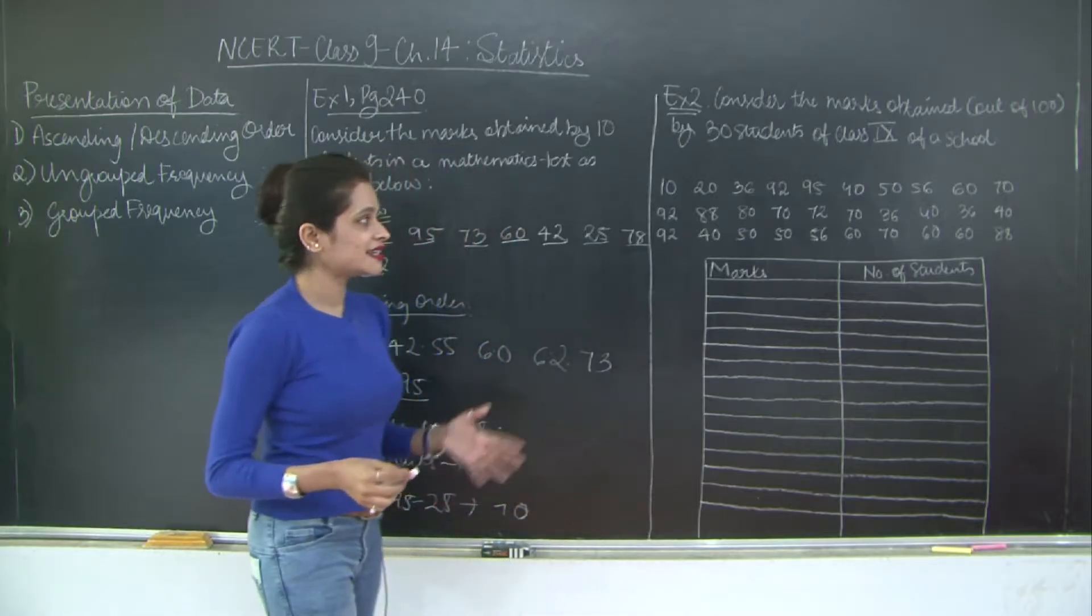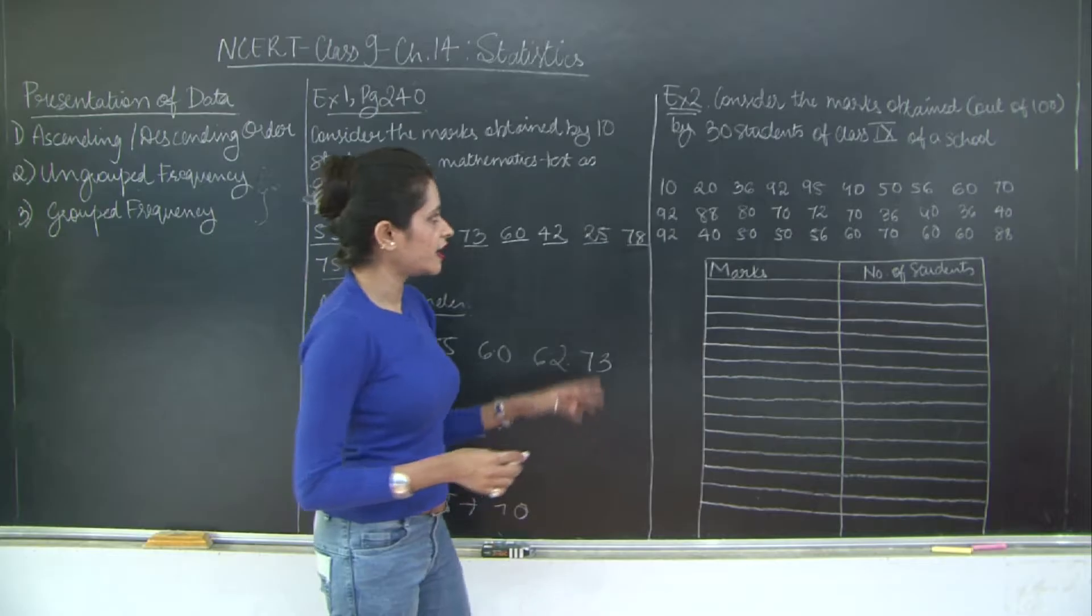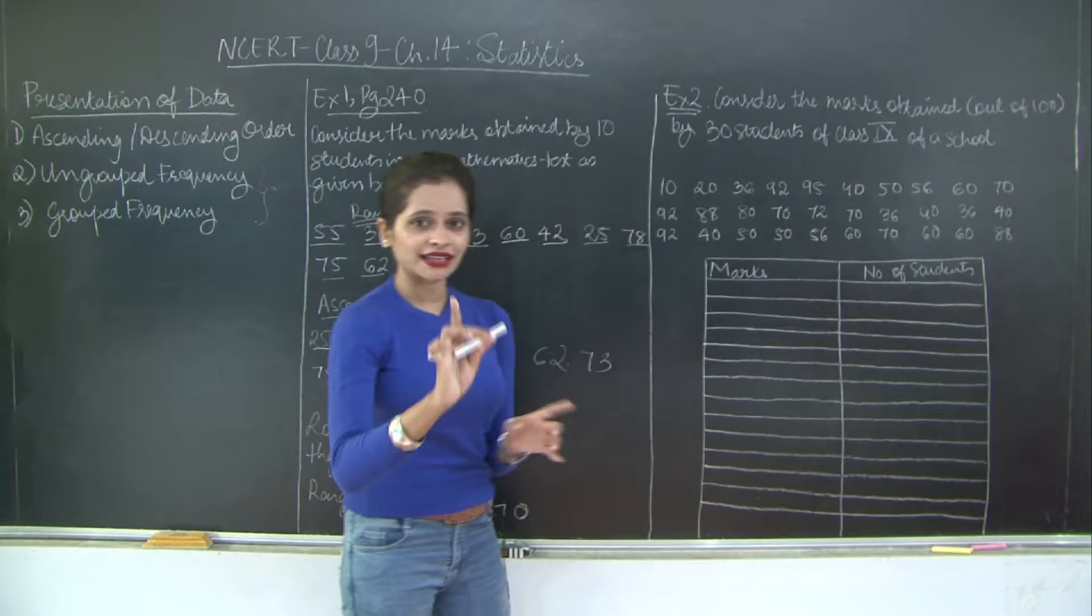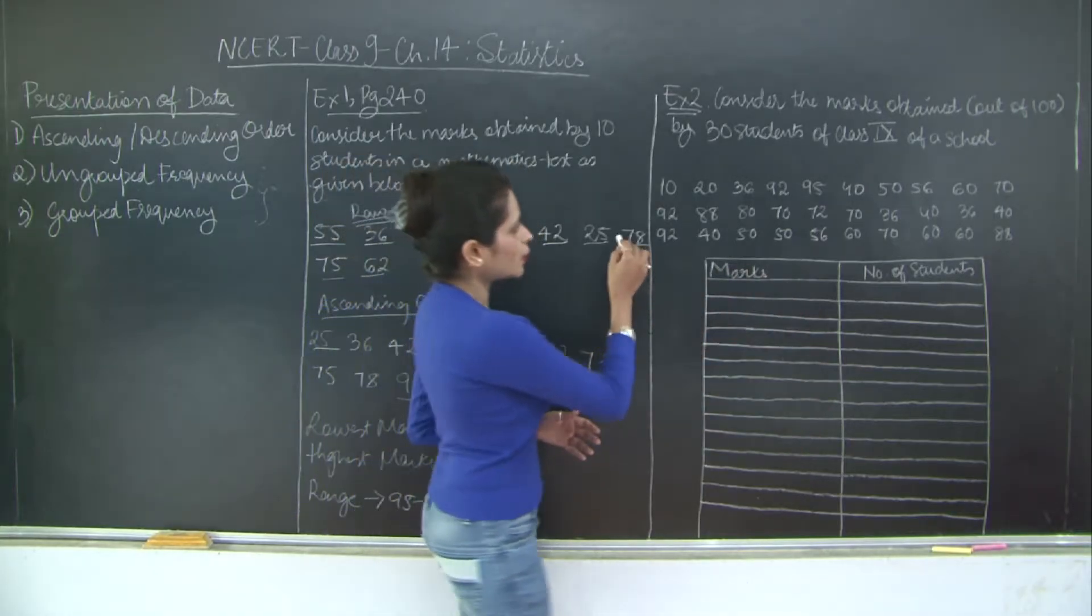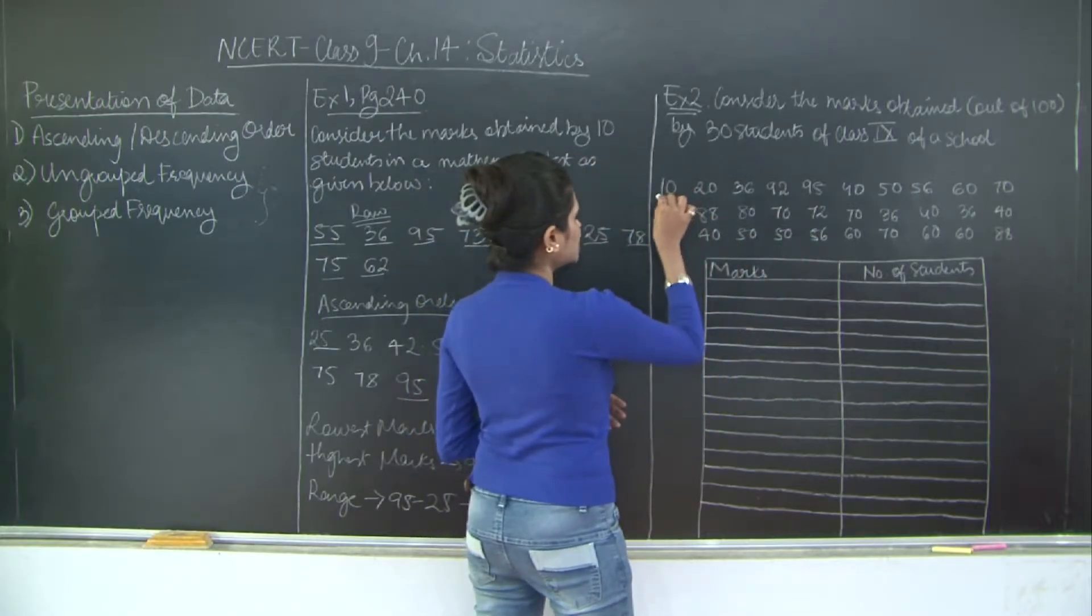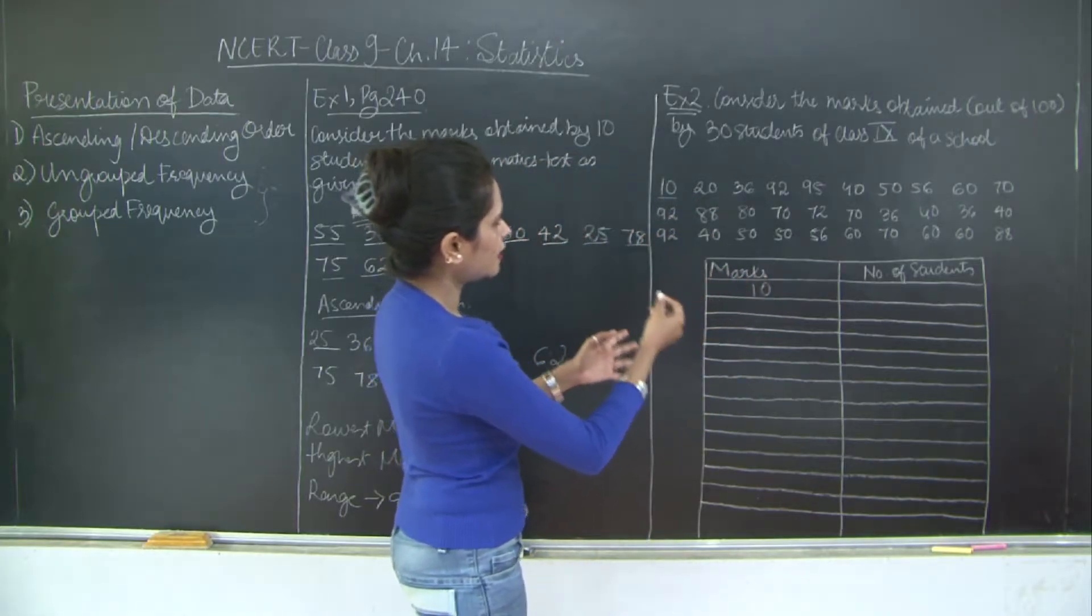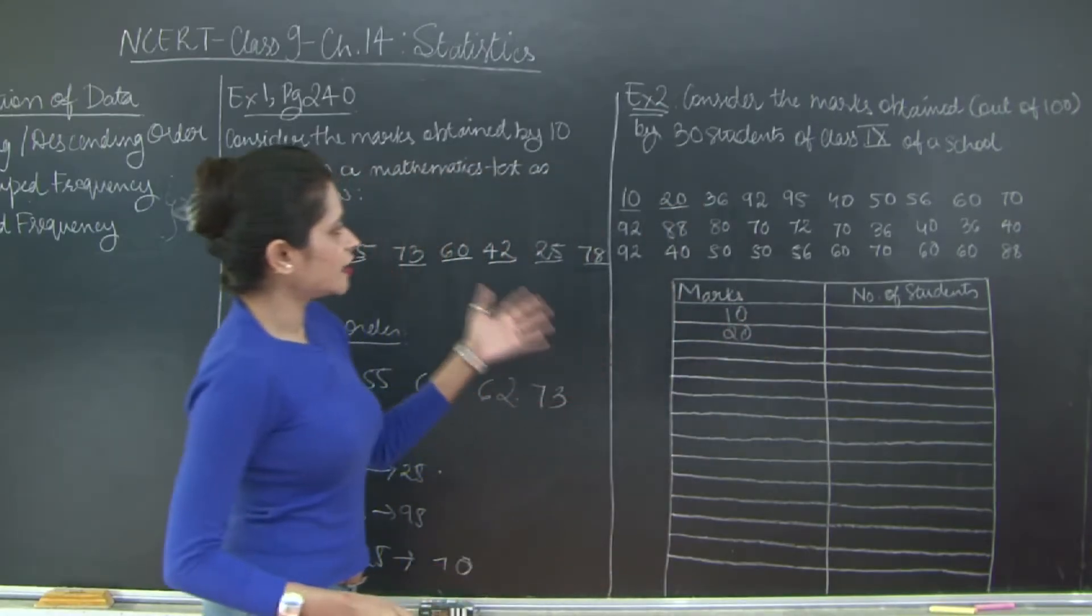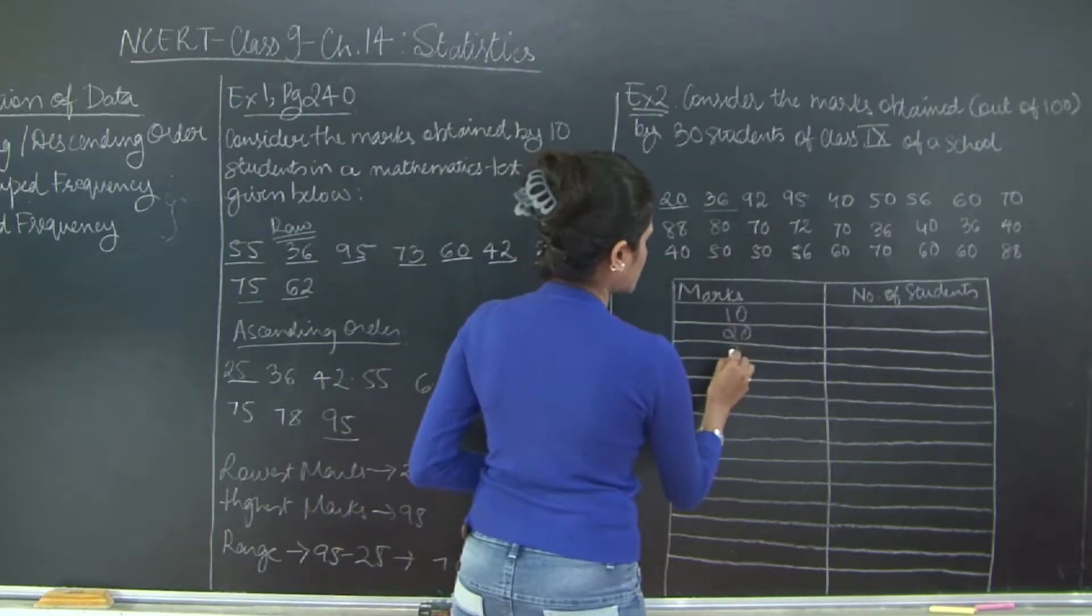So to overcome that problem you have another form of representation of your data that is ungrouped frequency. So in ungrouped frequency I'm just going to write all the marks that are present, just once. So if I have duplicate records, for example I have 50 and 50, I'm going to take that count only once. And I'm going to go from lowest to highest. So 10. Which is the other number greater than 10? 20. Then which is the other lowest number that we can see? It is 36. So I write down 36.